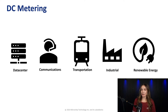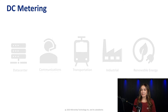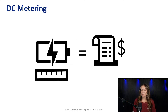The main application for JSON message authentication is DC metering, which applies across many industries such as data center, communication, transportation, industrial, and renewable energy. For these industries, it's critical that measurements given by DC meters are accurate and have not been tampered with, because the amount of power determines the cost for the customers.